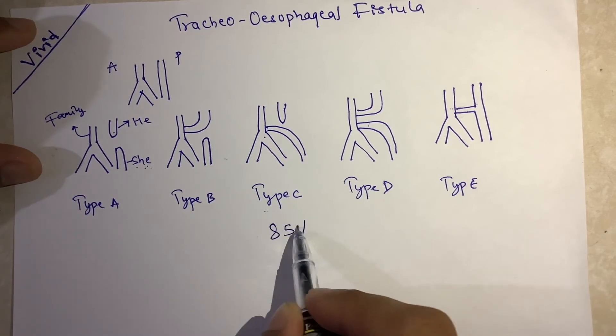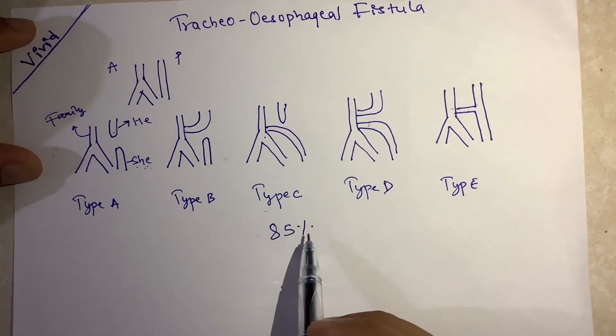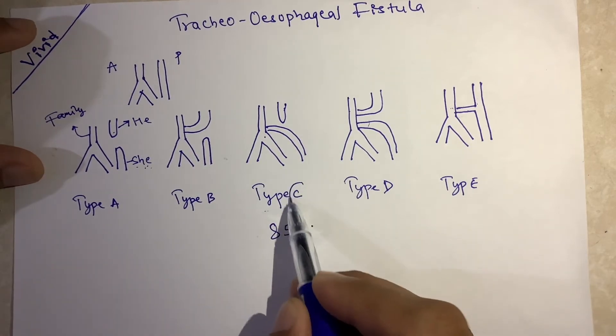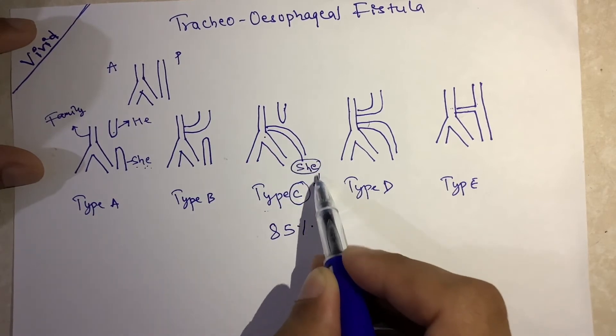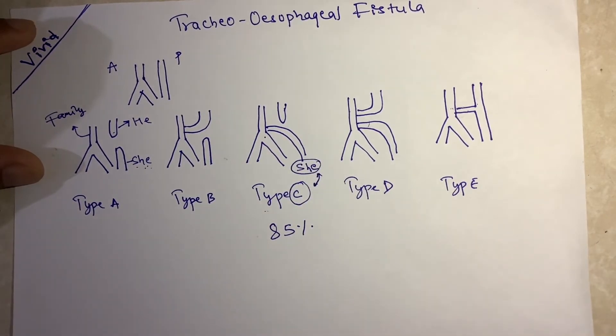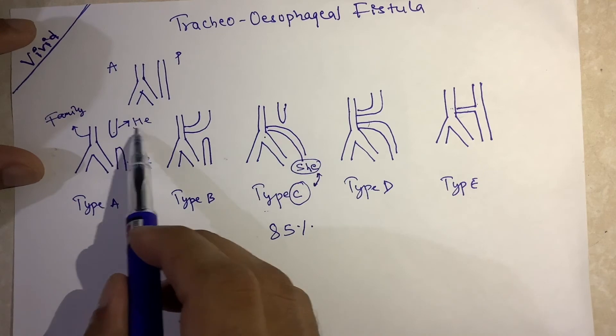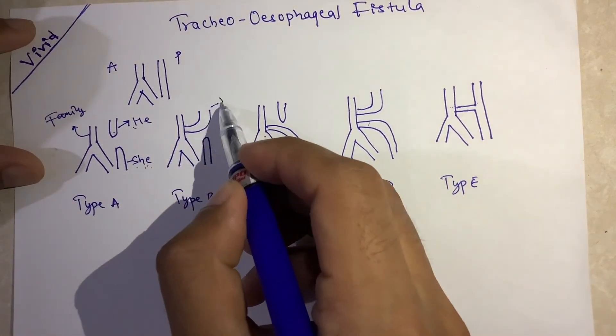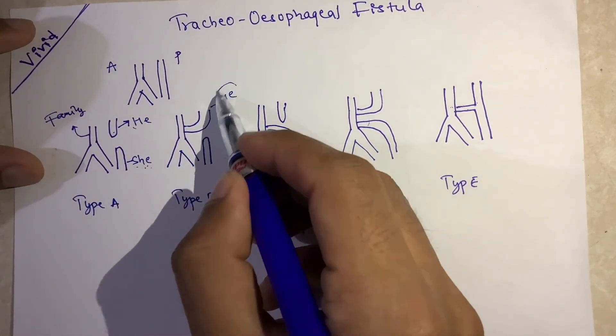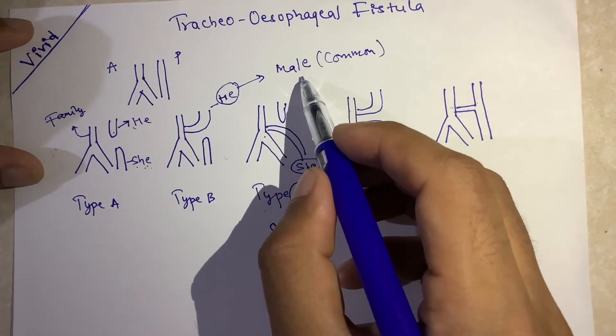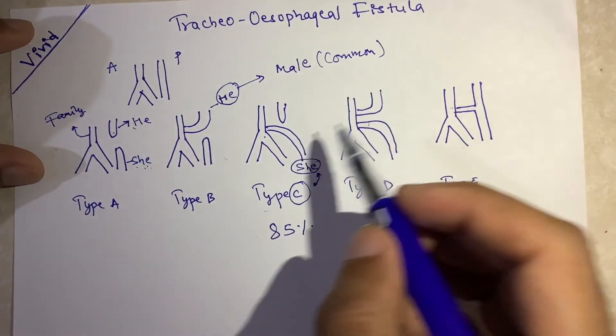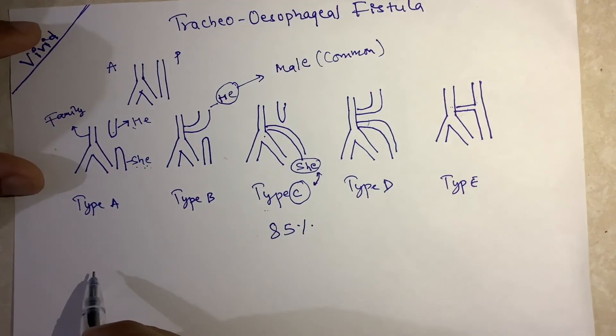That is 85% of the tracheoesophageal fistula is type C. So how do you remember this? This is type C and this is the she who is talking to the family. So it is common. Commonly he talks first to the family, so it is more common in male than in female.